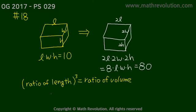So what was the ratio of the length? It became twice as long. So the ratio of the length is 2. And 2 cubed is 8. So 8 times the original capacity. So the original capacity was 10. The new volume capacity becomes 8 times 10 equals 80.